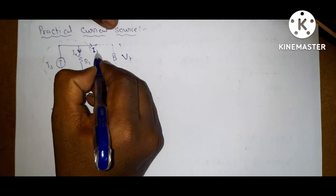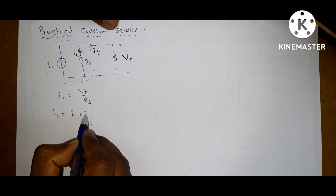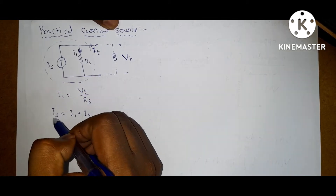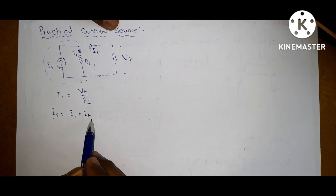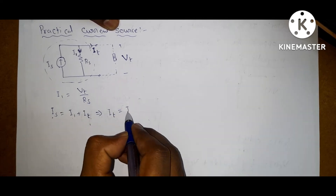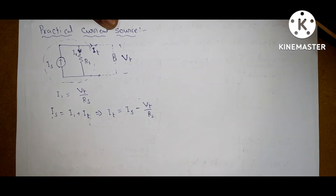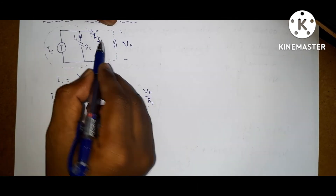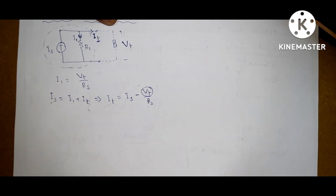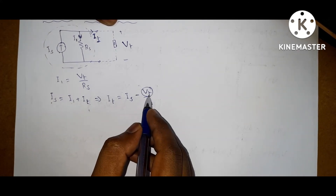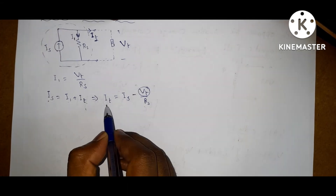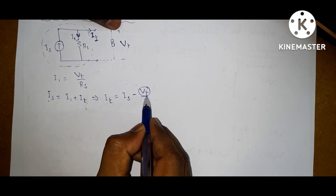By KCL, Is equals I1 plus It, where entering current is Is and leaving currents are I1 and It. From this, terminal current It equals Is minus Vt over Rs. So the terminal current depends on the terminal voltage. In an ideal current source, terminal current does not depend on terminal voltage, but in a practical current source it does.